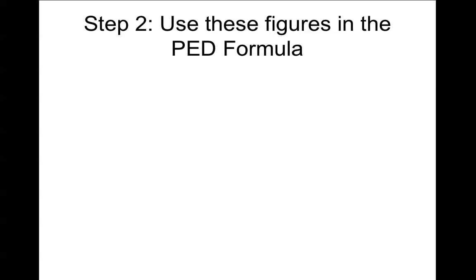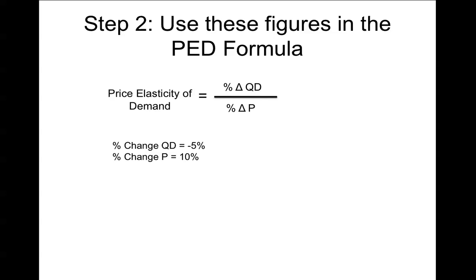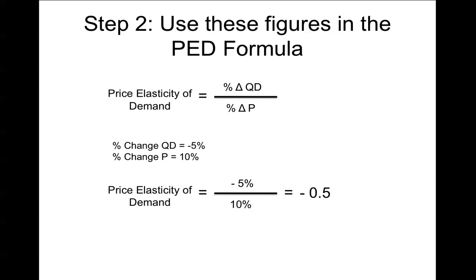Step two is to use those figures in the PED formula. PED = %ΔQD / %ΔP = −5% / 10%. At this stage we can drop the percentage signs and just do the division: −5 / 10 = −0.5. That figure is not a percentage — it's simply the relationship between the two, and −0.5 is the price elasticity of demand coefficient.